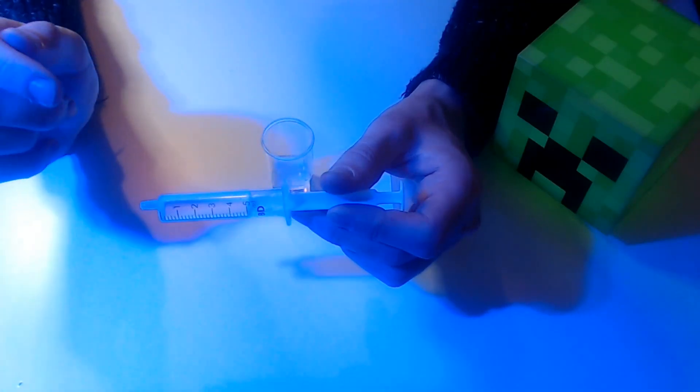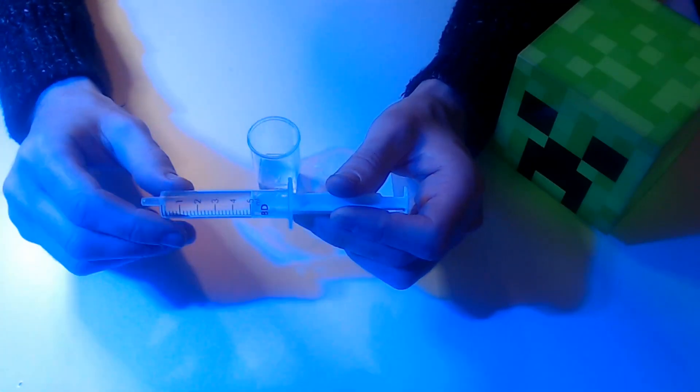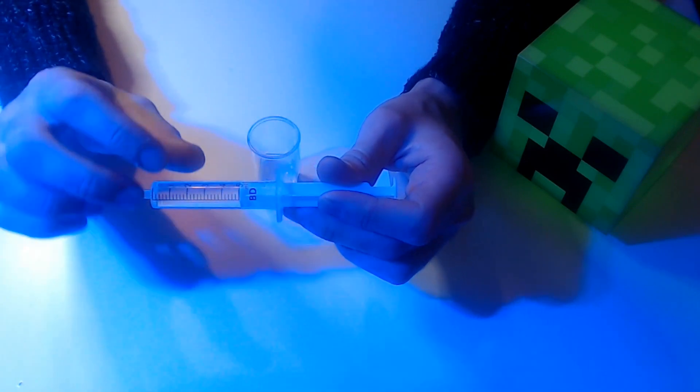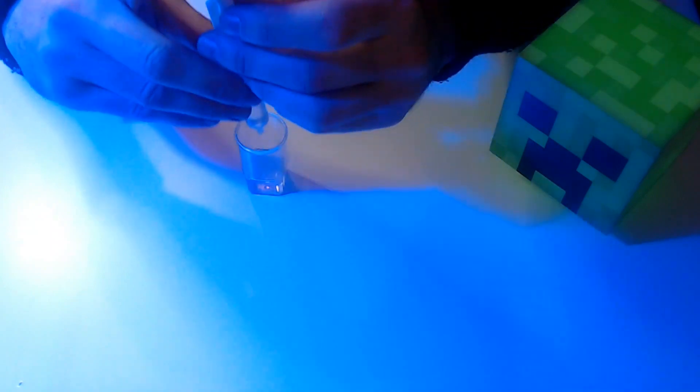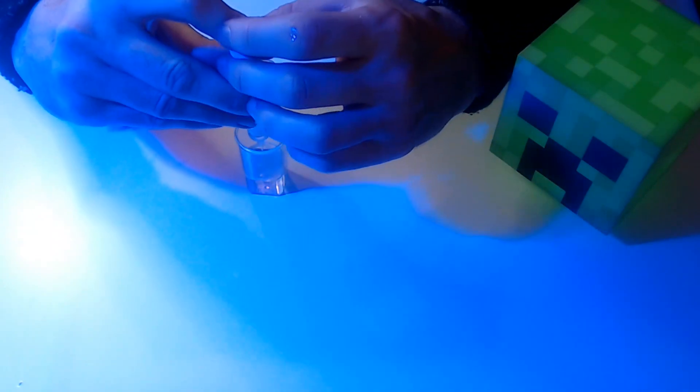First step, very simple: you want to add 10 mils into your water beacon here. Your water syringe only goes up to 5, so you need to do this twice. I've already put 5 mil in, the other 5 in.